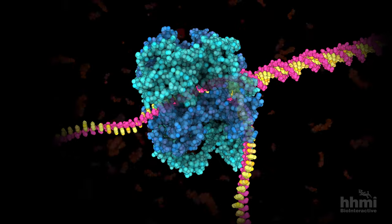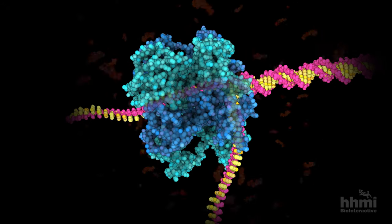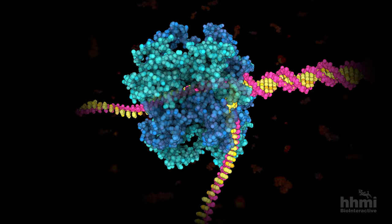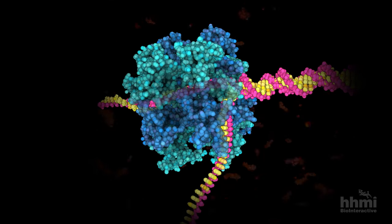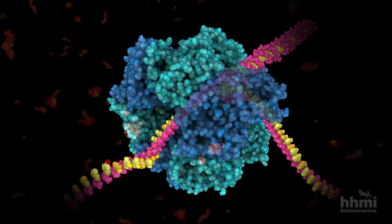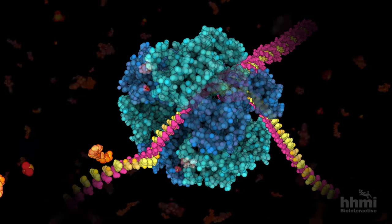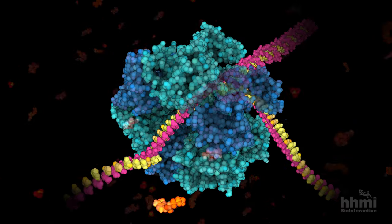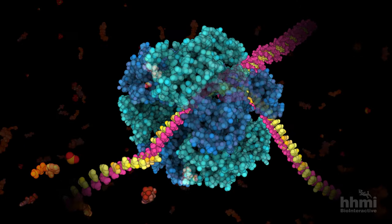The ring-shaped enzyme uses ATP hydrolysis to provide energy for the mechanical separation of strands of the DNA helix. With each step of the enzyme, two pairs of DNA bases are separated, requiring energy from two ATP molecules around the ring.